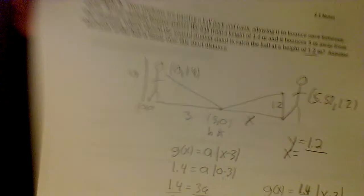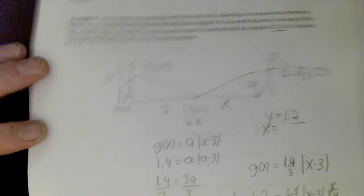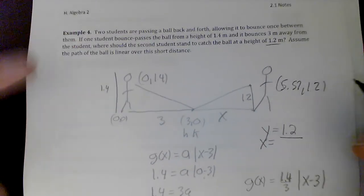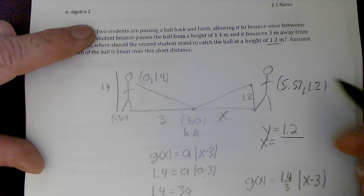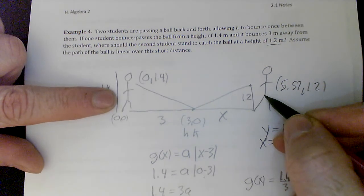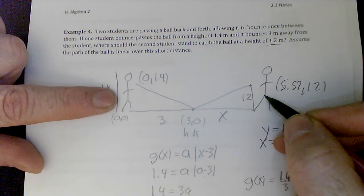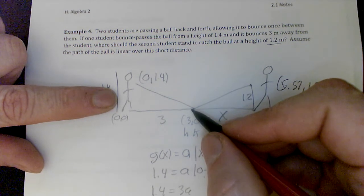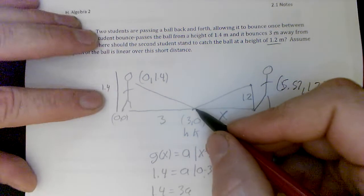Unfortunately, you didn't get to watch the other one either, because it somehow got lost when I tried to save it. But I have solved the last problem too. So let's talk about how we set it up. Two students are passing the ball back and forth. I instantly drew two students. Not the best drawings. They allowed to bounce once in between. And then I kind of read the rest of it to see where maybe I should draw this.